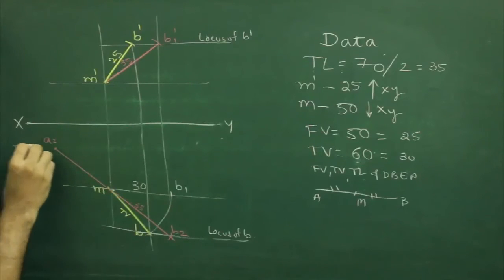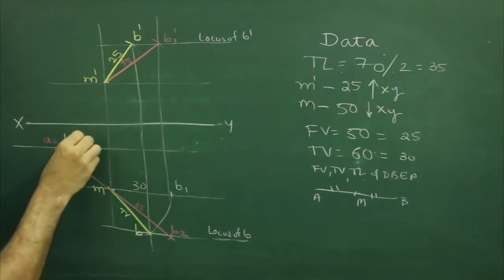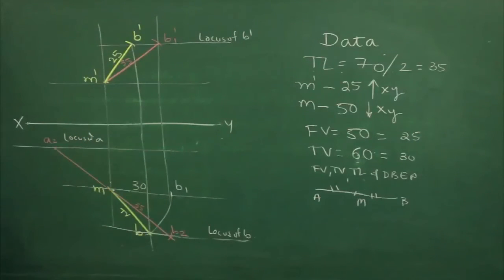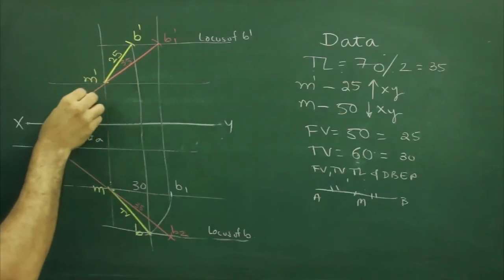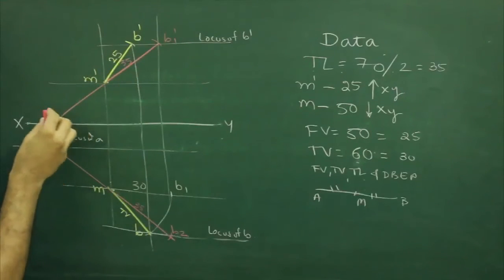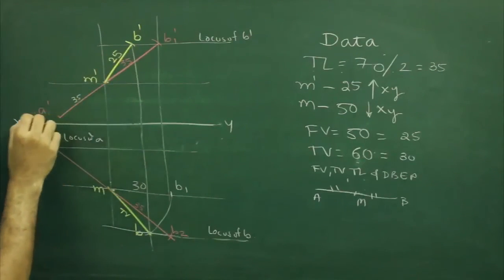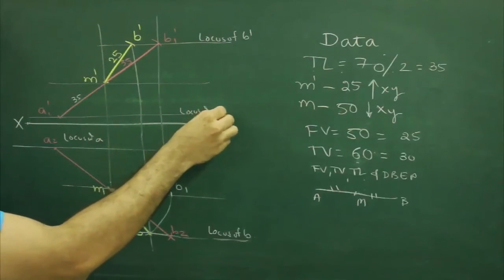Now we will draw this as a locus of A. Same way, in front view, we will extend this true length. Wherever it will cut, that would be A1 dash. We will extend 35 here. This is locus of A dash.